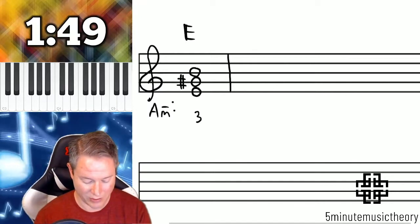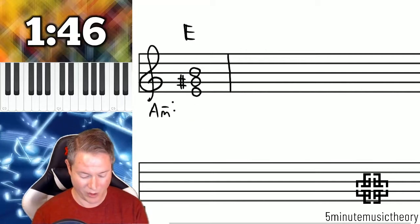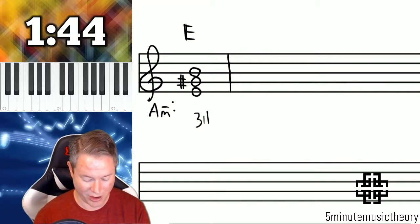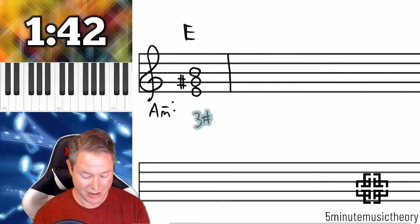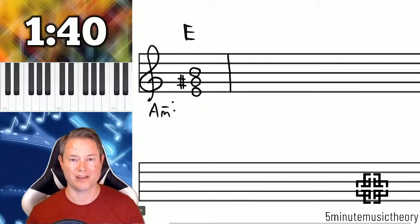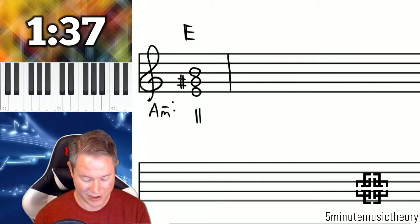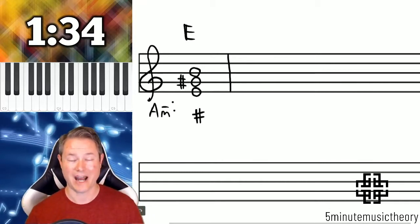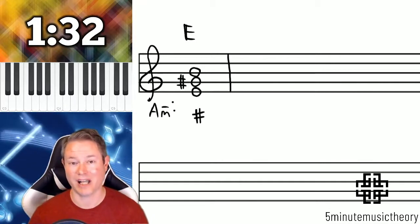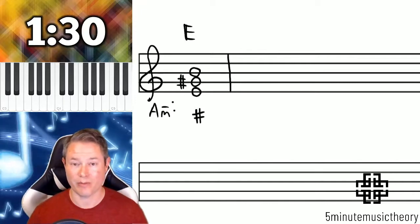So you might think, well, let's do a 3 with a slash through it. Nope. We don't make it that easy. How about a 3 with a sharp? We don't do that either. The most common way of showing that the third above the bass is adjusted, and it's usually a sharp, is just simply to put a sharp there. If there's an accidental without a number, it's implied that that's the third above the bass.